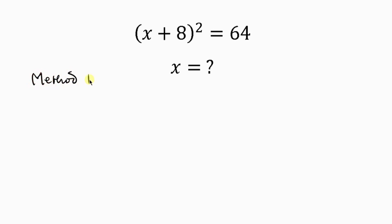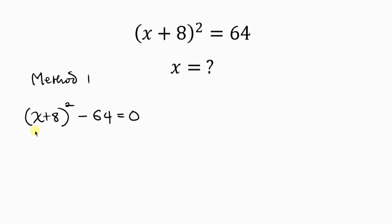For Method 1, we move the 64 to the left hand side, so we have (X + 8)² and 64 crosses to the left and becomes minus 64, equal to 0. Simplifying further, we have (X + 8)² minus 64.